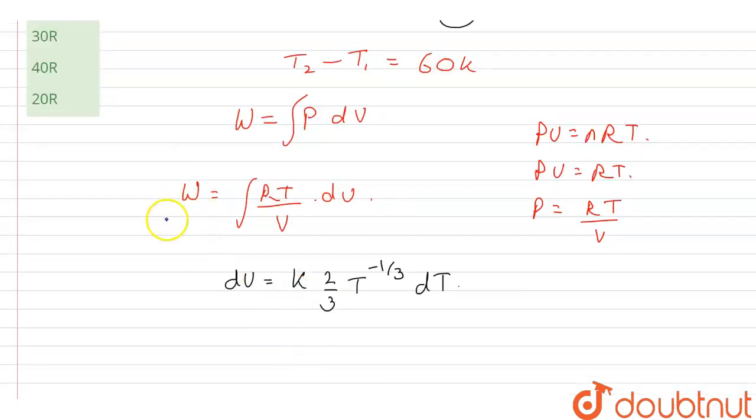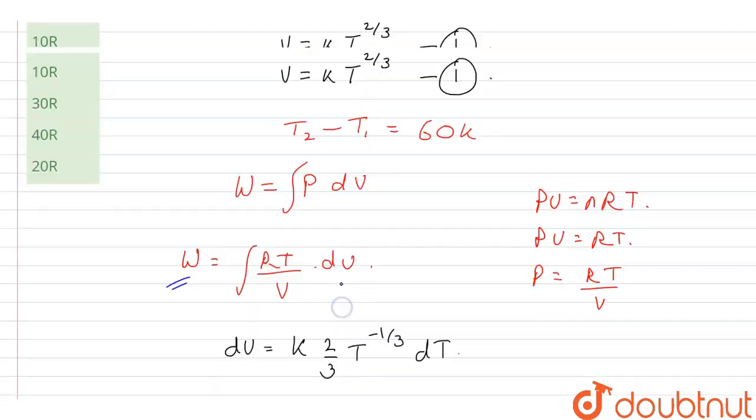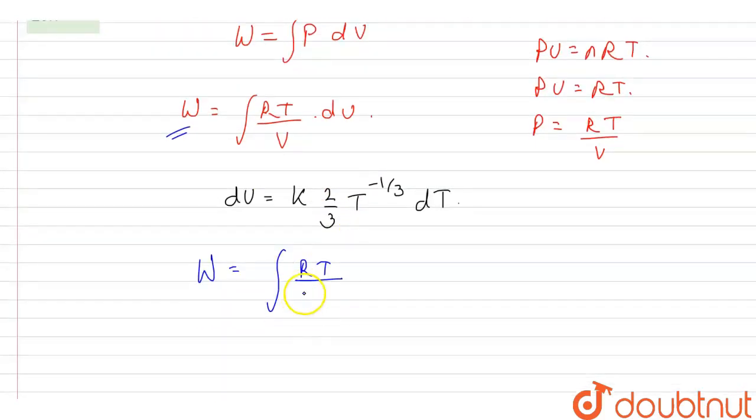I will get work done equal to integration of RT/V dV, where V is kT^(2/3), multiplied by dV which is k (2/3) T^(-1/3) dT. Now k and k will get cancelled.